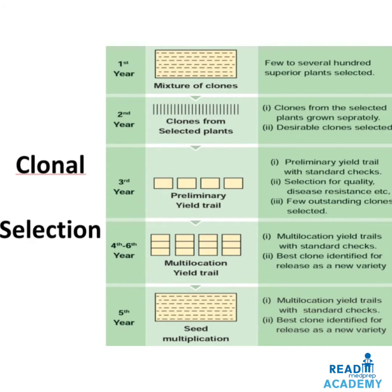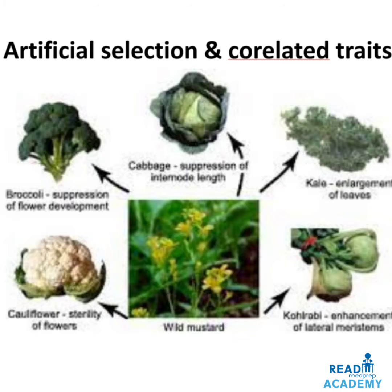This image shows artificial selection and the correlated traits derived from wild mustard. Broccoli was obtained by suppression of flower development; cabbage by suppression of internode length; kale by enlargement of leaves; kohlrabi by enhancement of lateral meristem stems; and cauliflower by sterility of the flowers. Various procedures were done on wild mustard to increase yield.